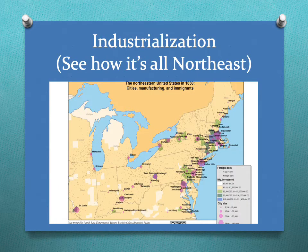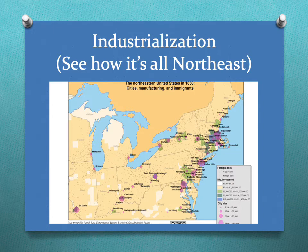This is a nice little map that shows you about industrialization. All those colored dots represent immigration data.